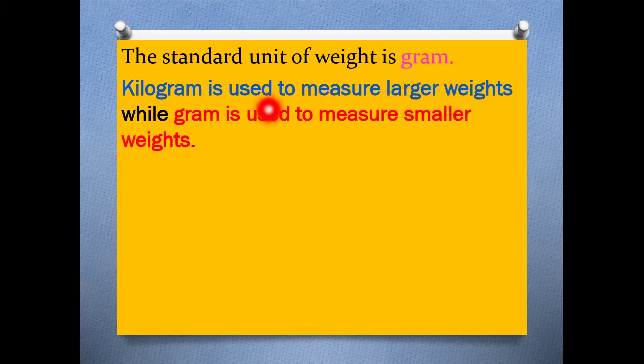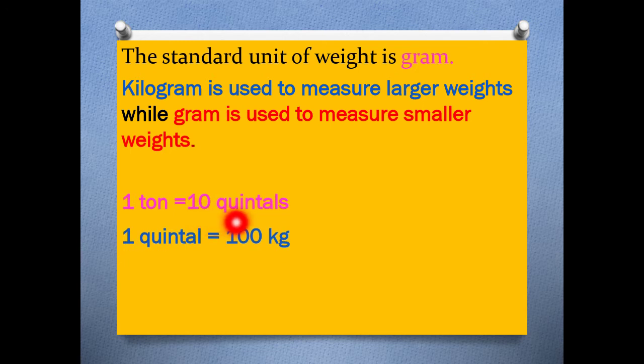To measure larger weights we use kilogram and for measuring smaller weights we use gram. Further, one ton has 10 quintals in it and one quintal has 100 kilograms in it.